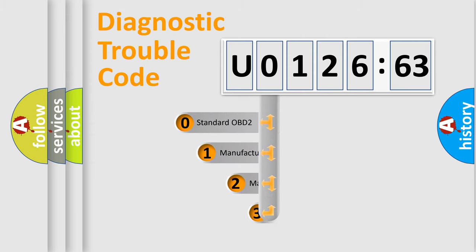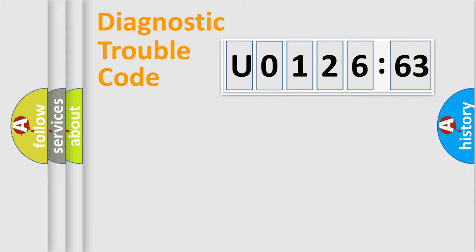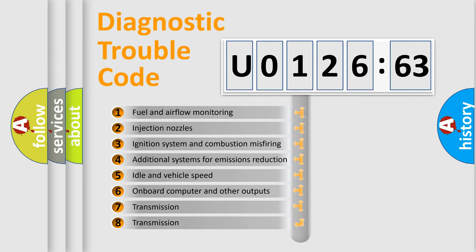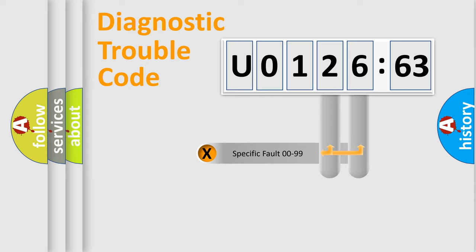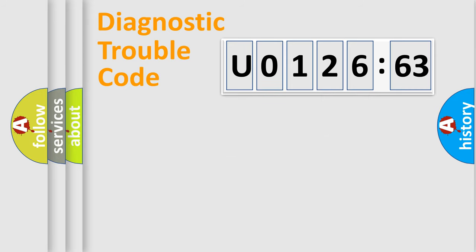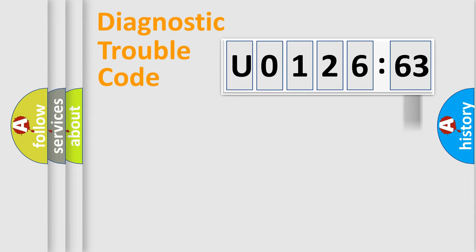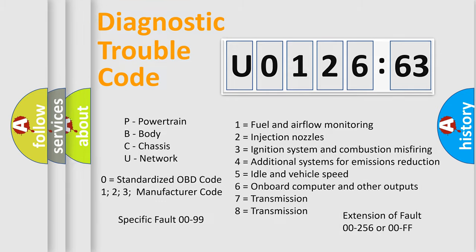This distribution is defined in the first character of the code. If the second character is expressed as zero, it is a standardized error. In the case of numbers 1, 2, or 3, it is a more manufacturer-specific expression of the car-specific error. The third character specifies a subset of errors. The distribution shown is valid only for the standardized DTC code. Only the last two characters define the specific fault of the group. The add-on to the error code serves to specify the status in more detail — for example, short to the ground. Note that such a division is valid only if the second character code is expressed by the number zero.